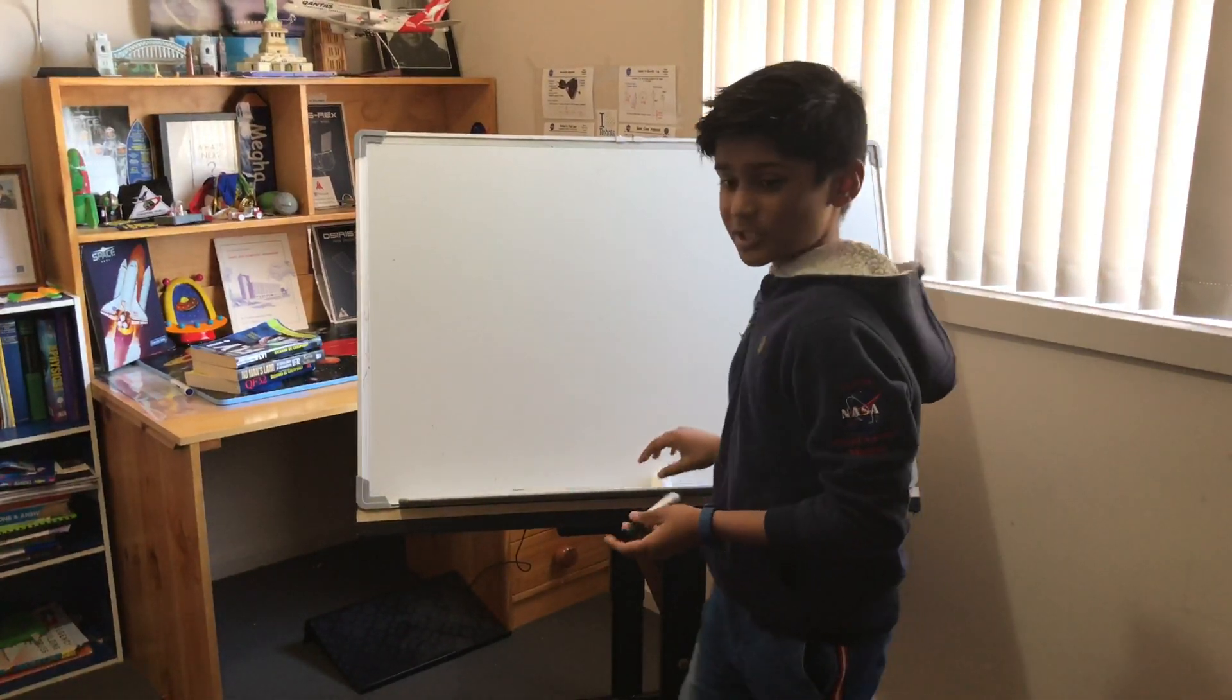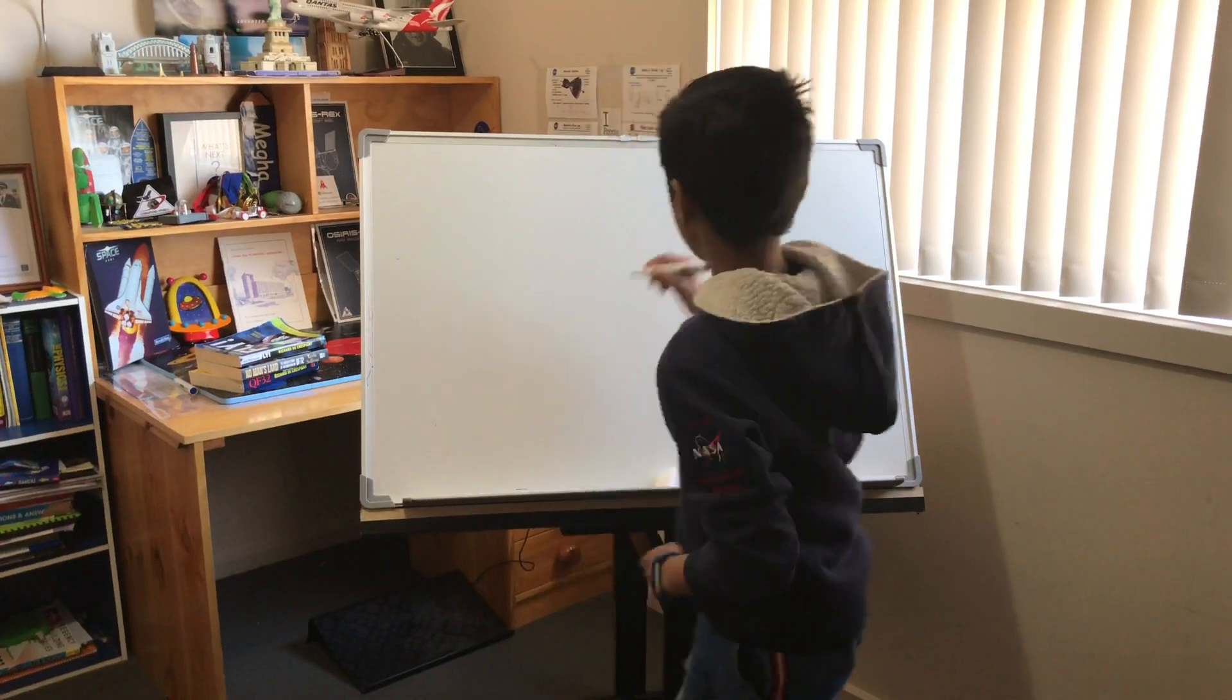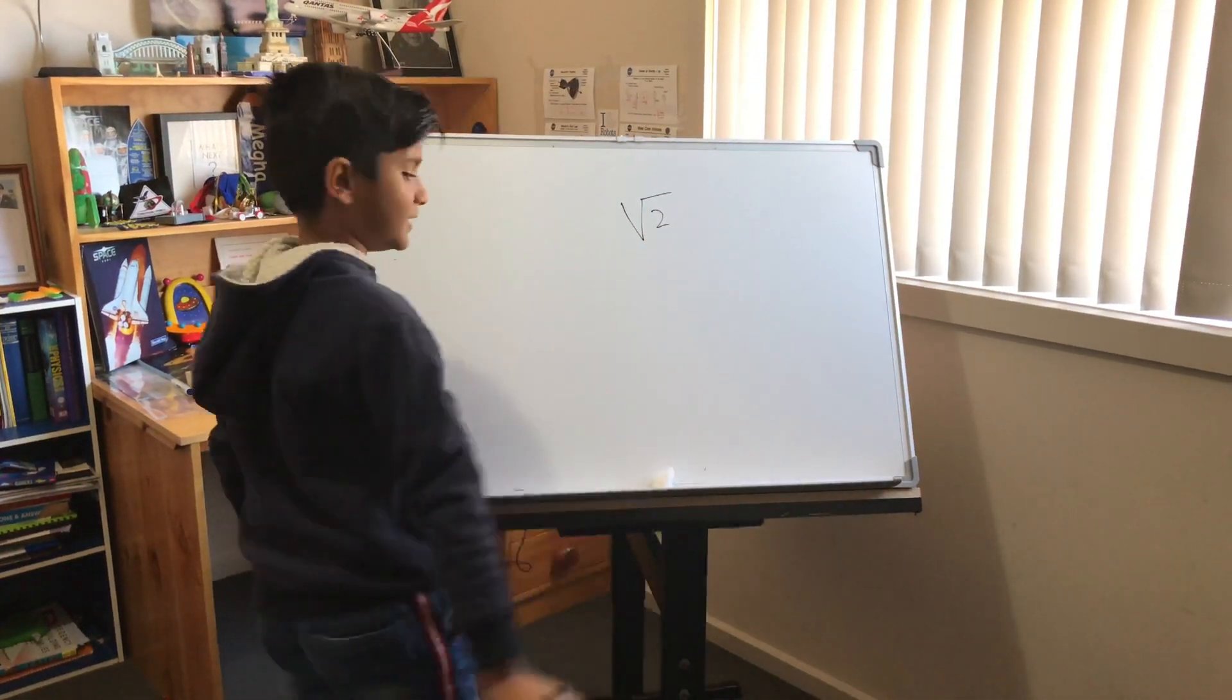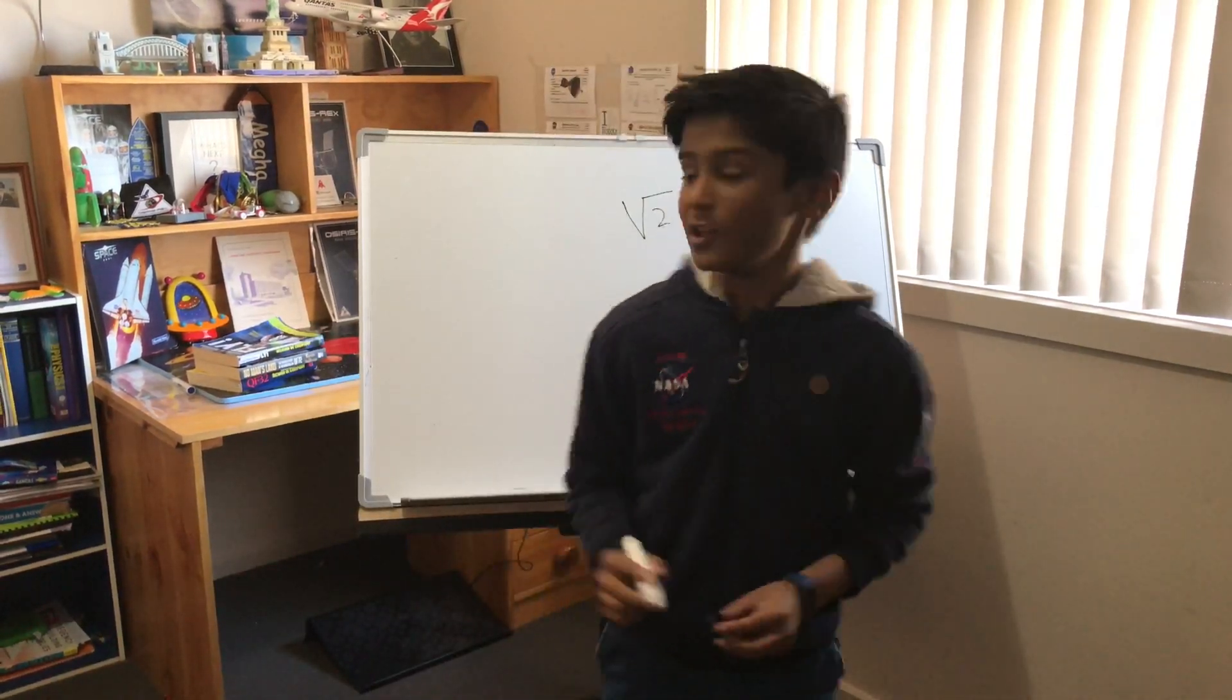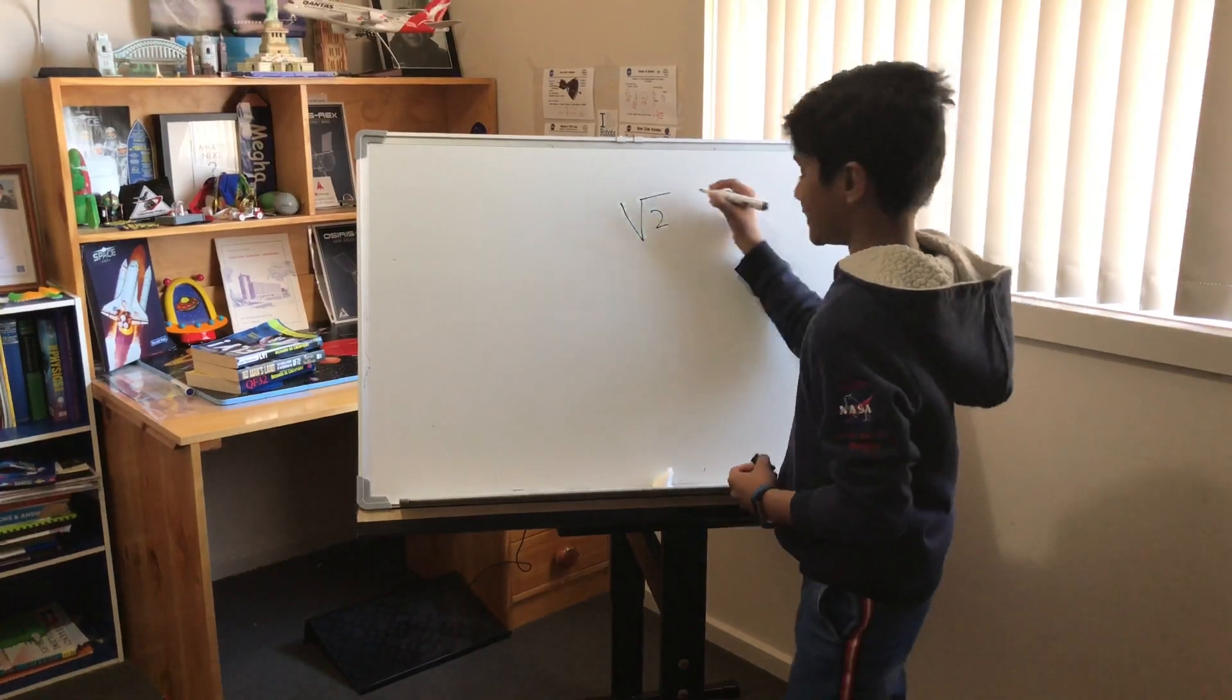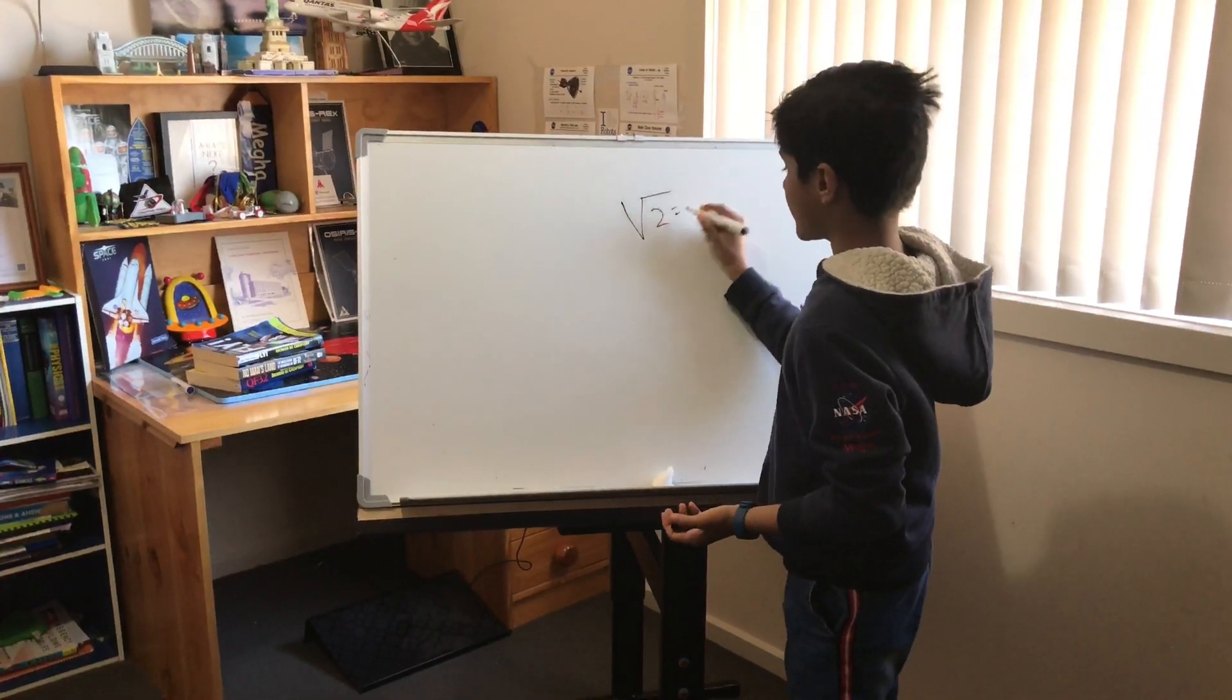Hippasus asked him what the square root of 2 was. This is the square root of 2. Now this is a fancy sign you've probably seen in big equations, but that just means the square root of 2. Pythagoras started to work out the square root of 2.